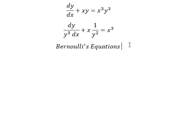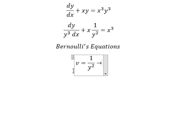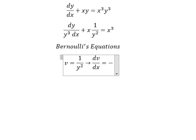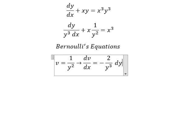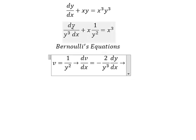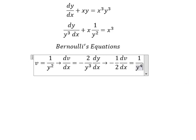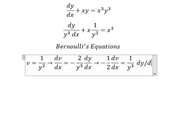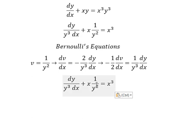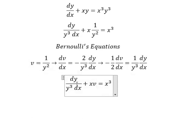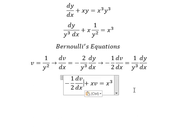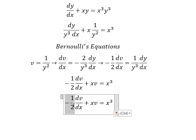So we need to use v equal to 1 over y squared. We need to do the first derivative of both sides, and we have dv over dx equals negative 2 over y to the power of 3, times dy over dx. Because we don't have negative 2, we need to divide both sides by negative 2. Next, we multiply both sides by negative 2.